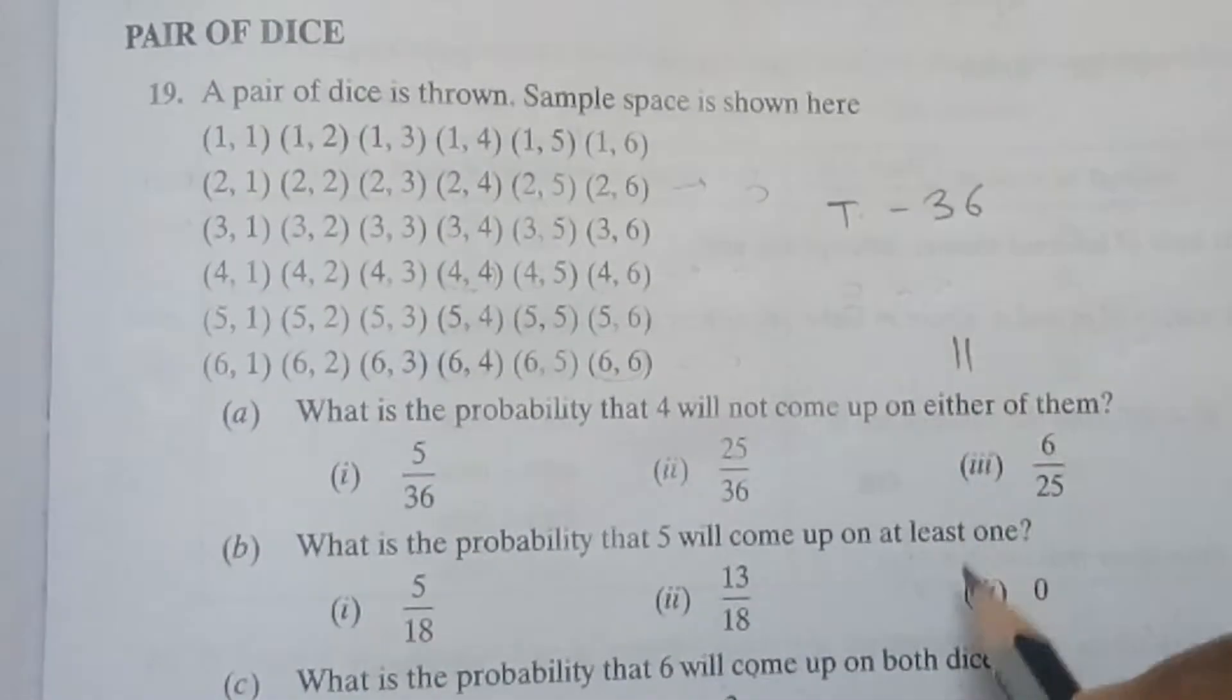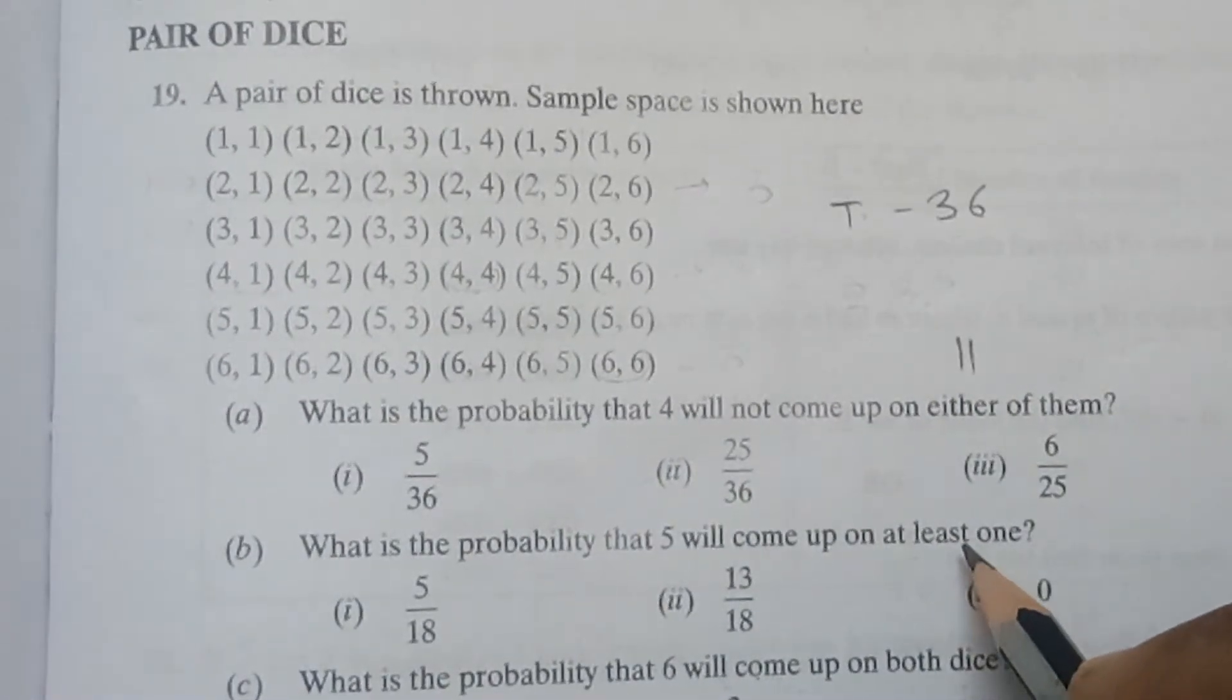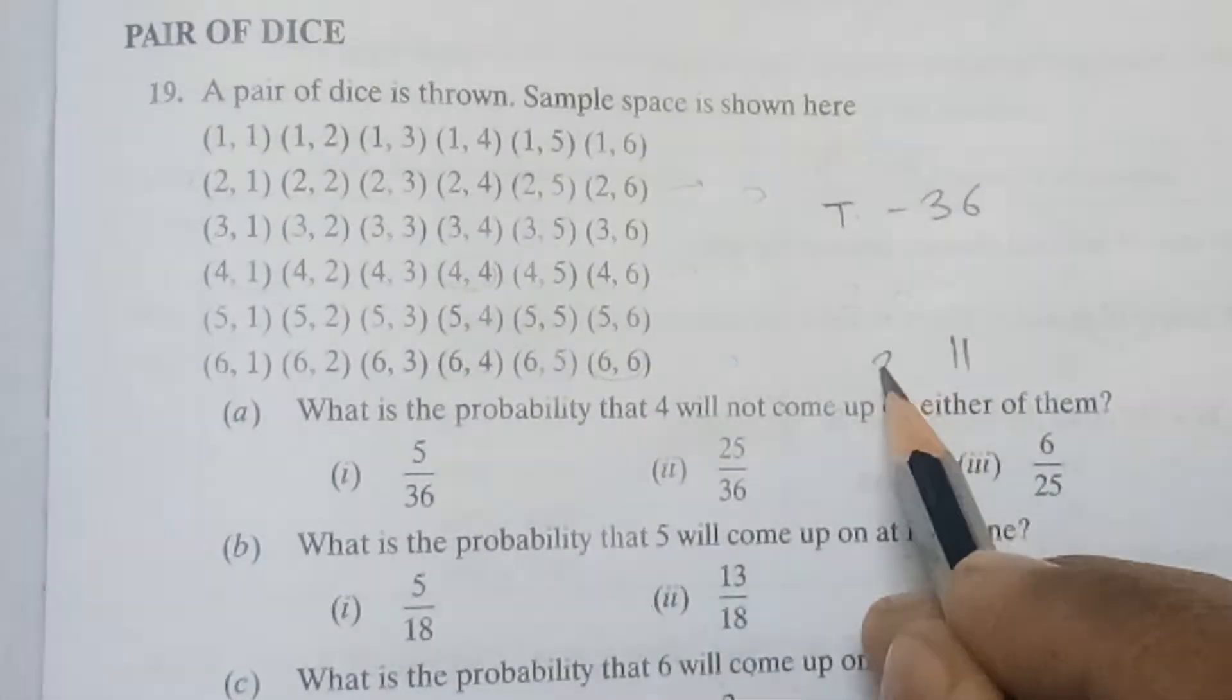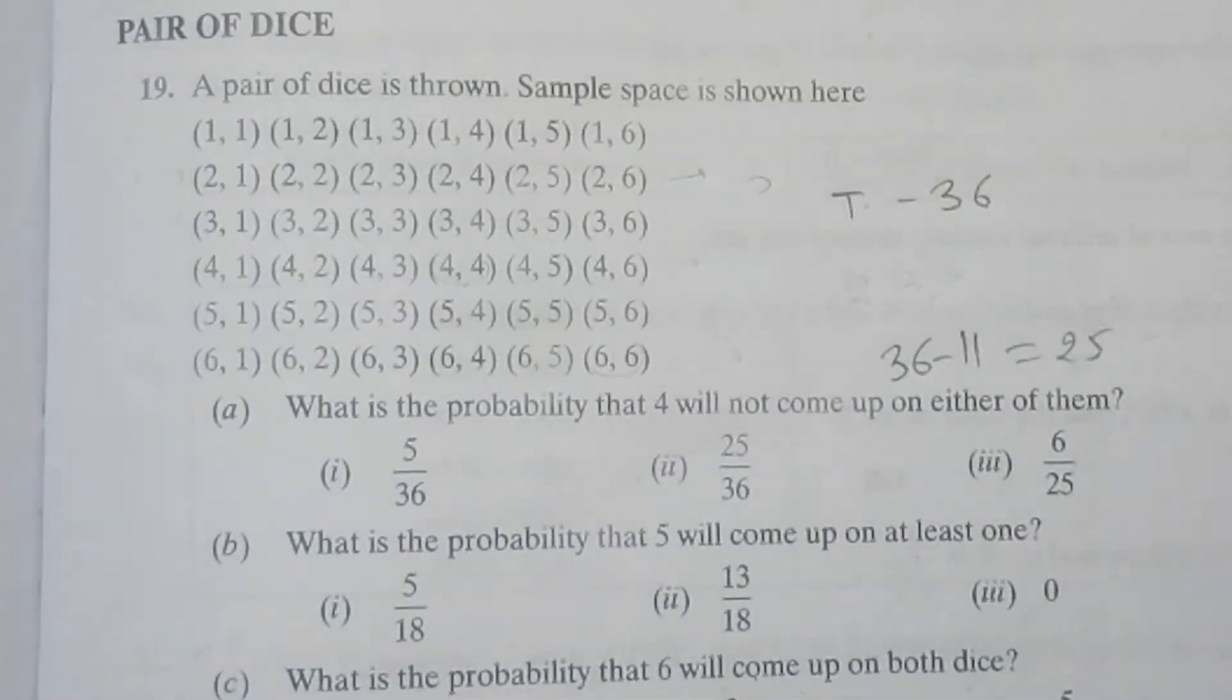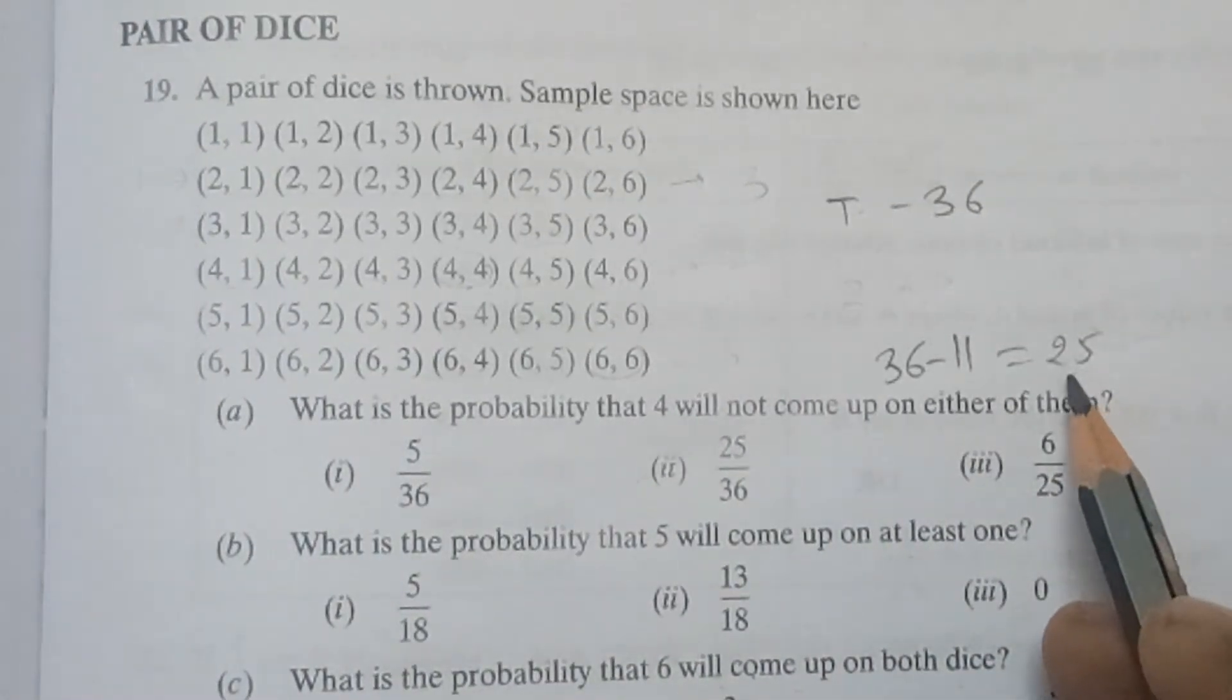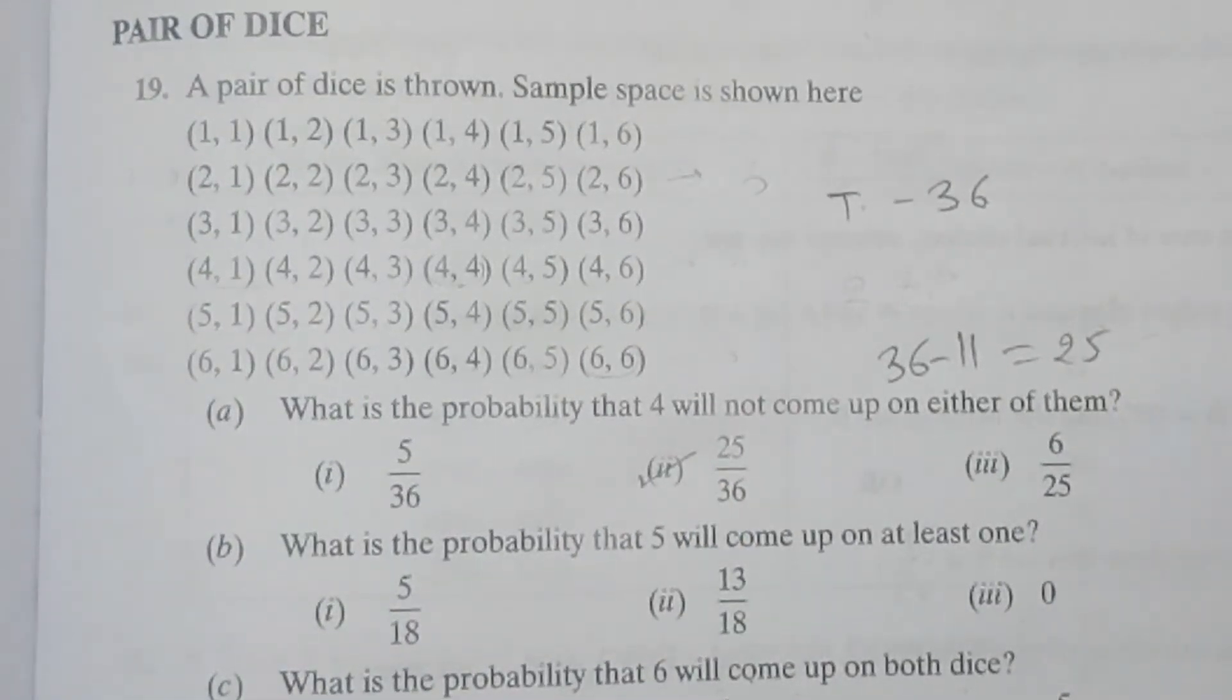And total are 36. We will subtract 11 from 36 which equals 25. So probability that 4 will not come either time is 25 over 36.